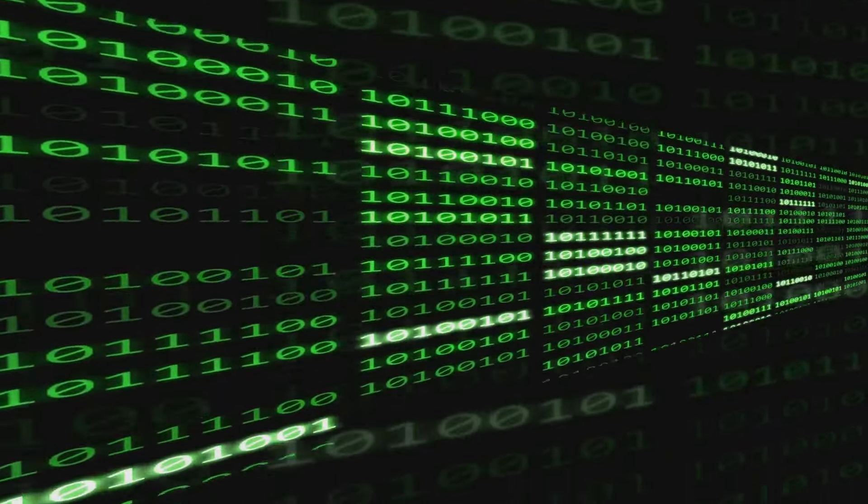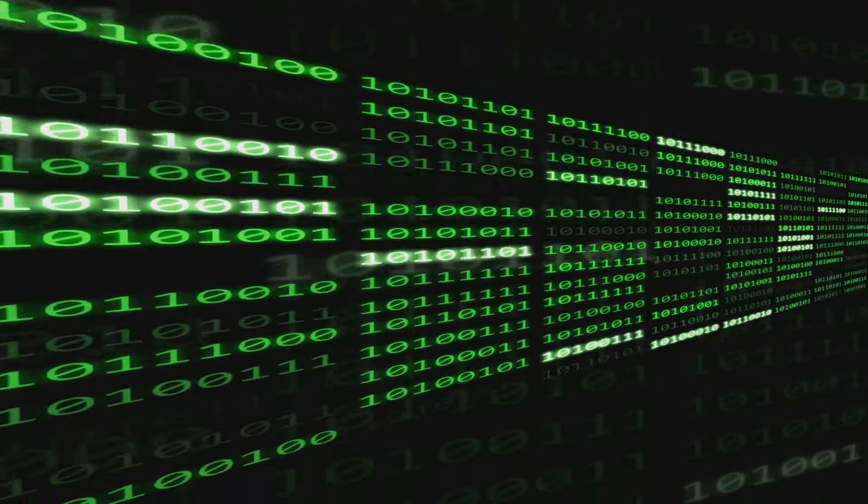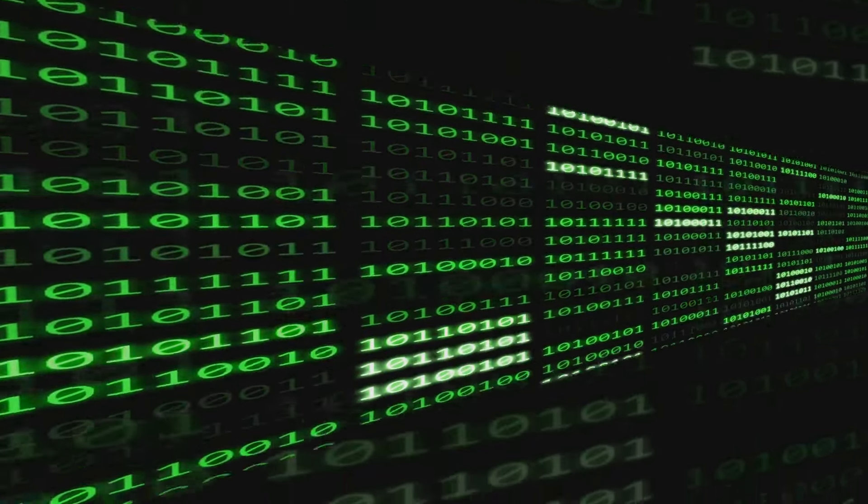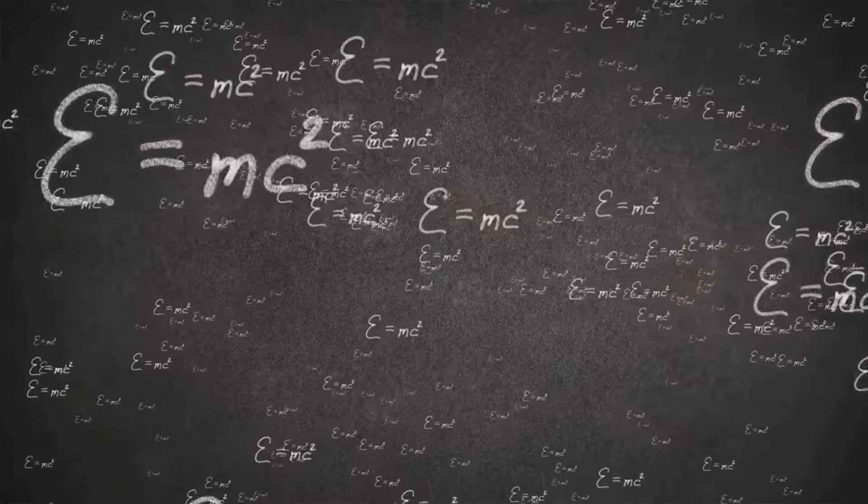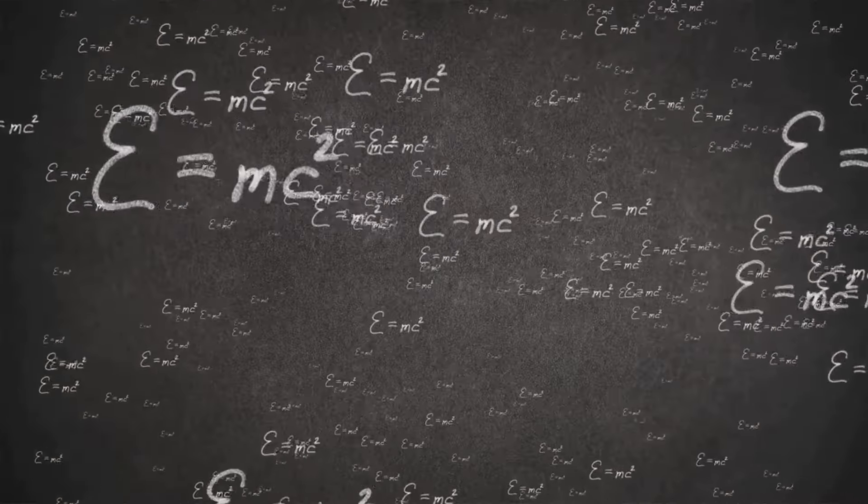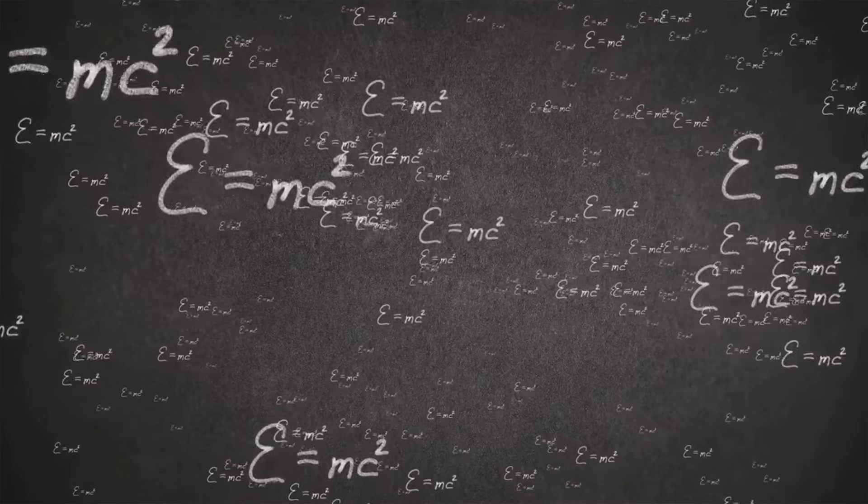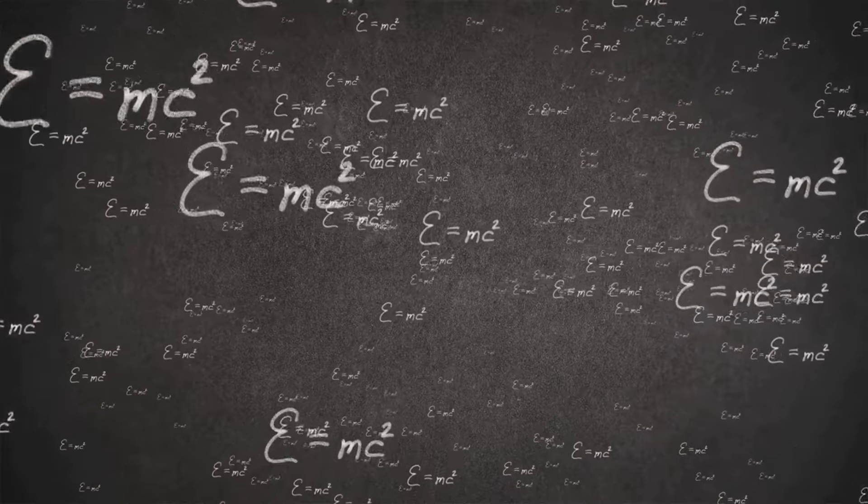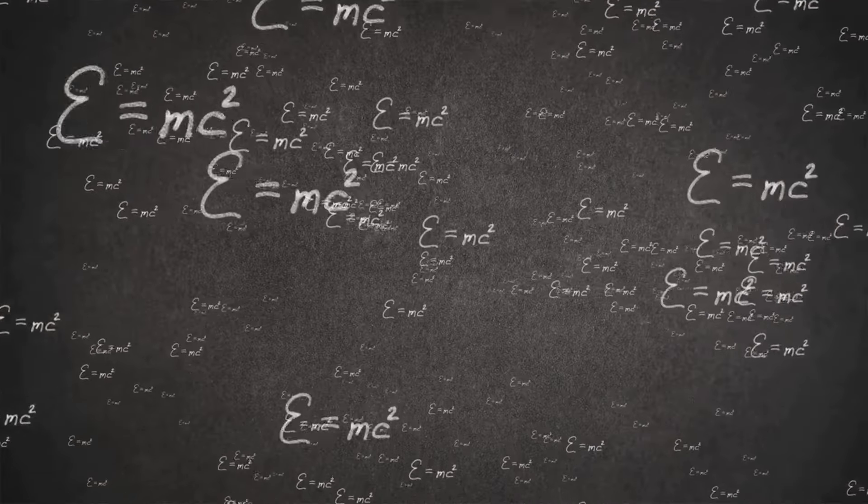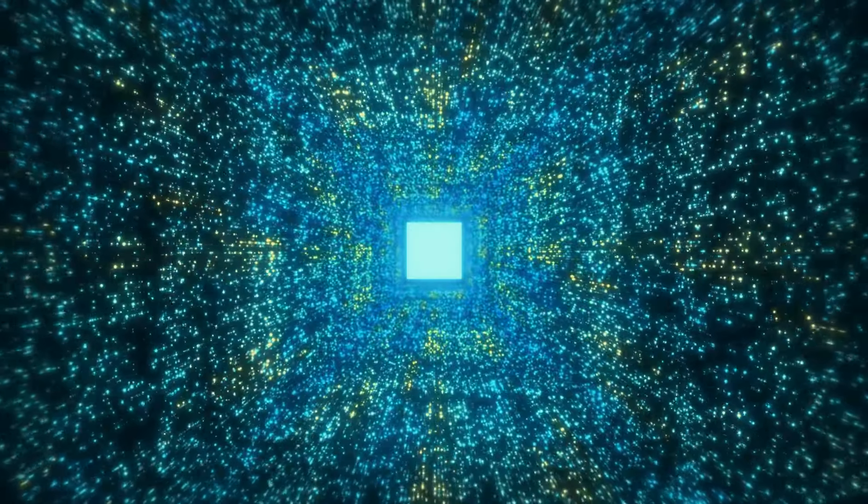Einstein was famously skeptical of quantum entanglement. He referred to it as spooky action at a distance because he didn't believe that two particles could be instantly connected across vast distances in the way quantum mechanics predicted. In Einstein's view, this idea violated his theory of relativity, which states that nothing can travel faster than the speed of light, including information.